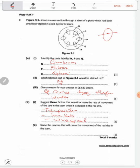Name the process that will cause the movement of the red dye in the stem. The red dye can move by capillary action, diffusion, or osmosis. Since the dye is in liquid form, you can use osmosis or diffusion because osmosis is just a special type of diffusion. Thank you so much for watching. I'll see you in the next video.